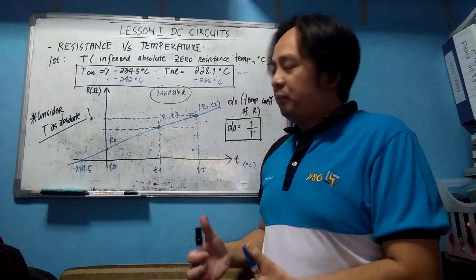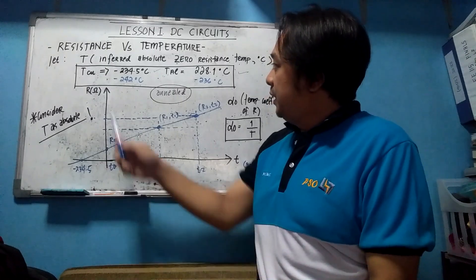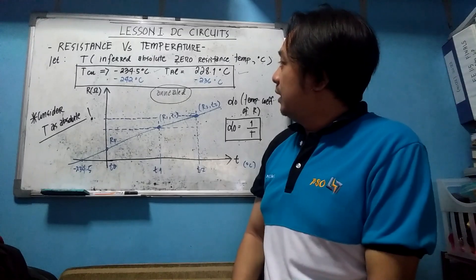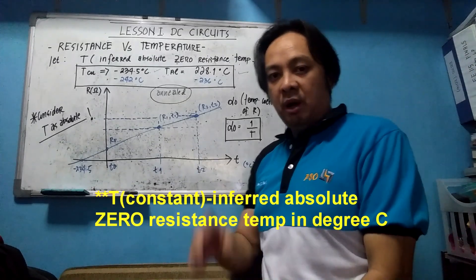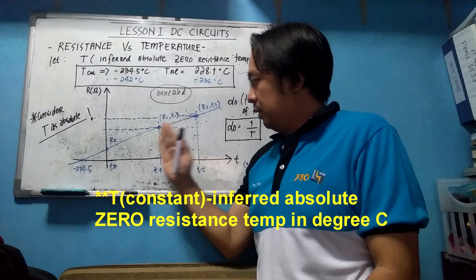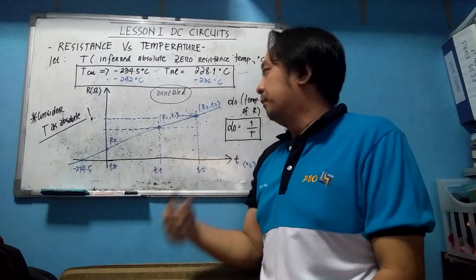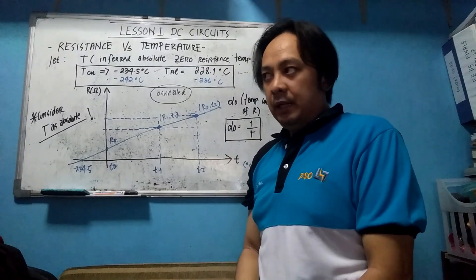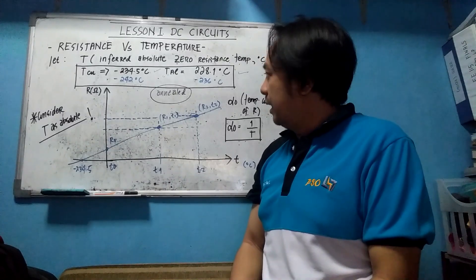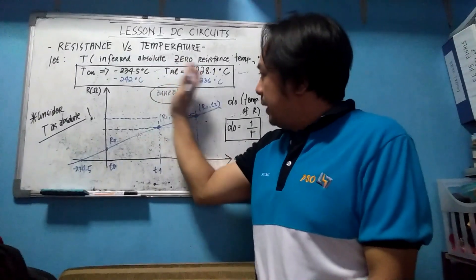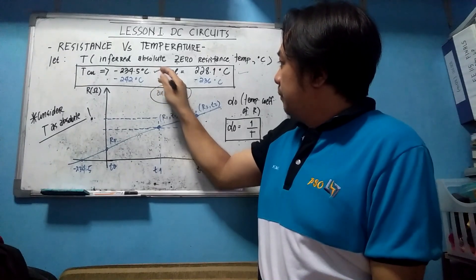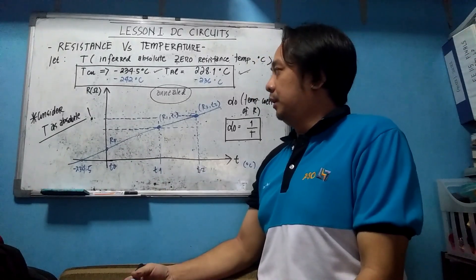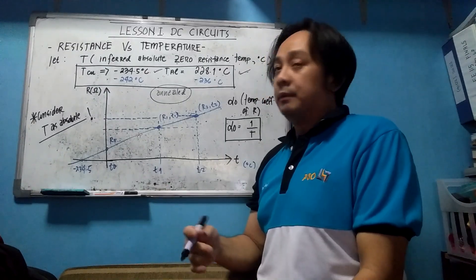Here we will first tackle some definitions, especially the T constant. The T here is the Inferred Absolute Zero Resistance Temperature. It means if you have a conductor placed at various temperatures — hot or cold — there is a certain temperature at which the resistance will become zero. These values are based on experimental data.